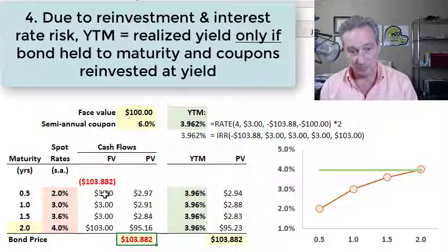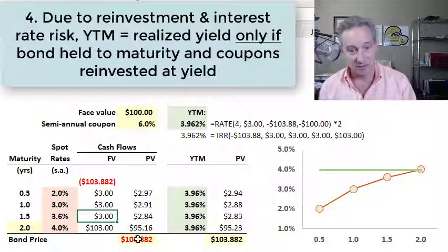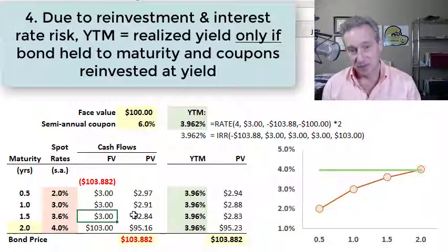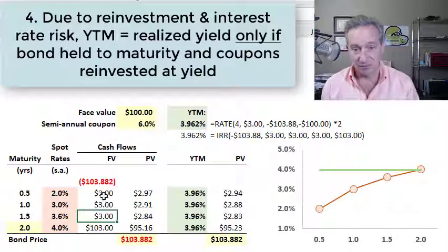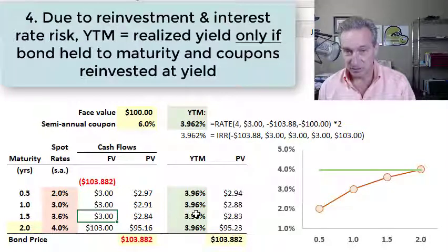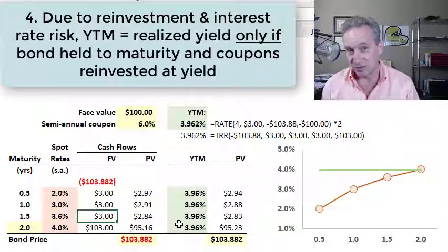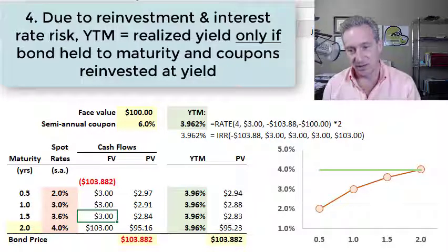And importantly, if and only if we reinvest the coupons at the same yield to maturity, because the bond has both duration or interest rate risk and reinvestment risk of the coupons. If we reinvest the coupons at a different rate than the yield, the realized return will be different than the yield. I hope that's helpful.